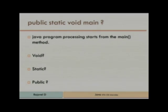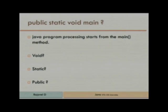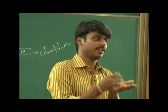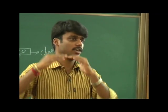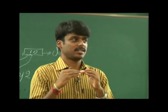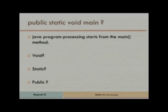Why is the main method 'public static void main'? Void because it is not returning any value. Static: if you want to invoke a method that is not static, you must access through an object. But program execution starts with main — before that we cannot create an object. That is why main is static. Public: it can be accessed from outside the class.